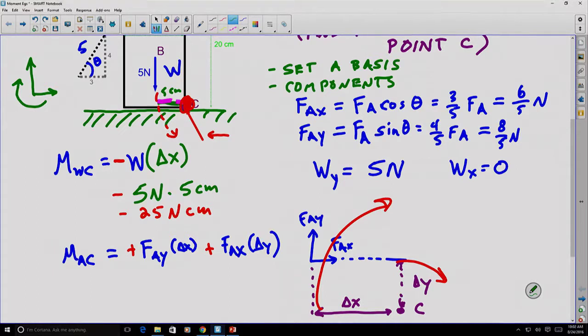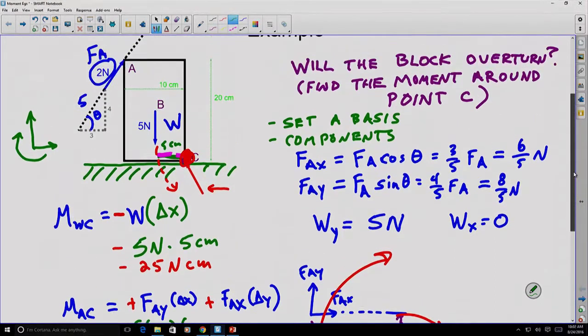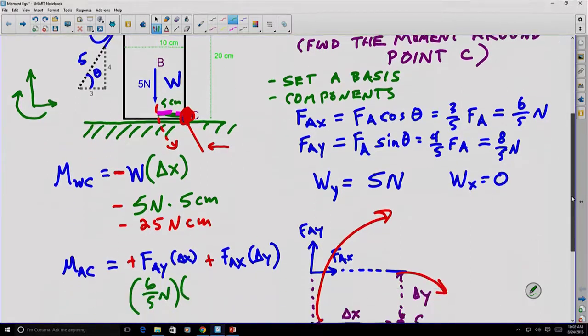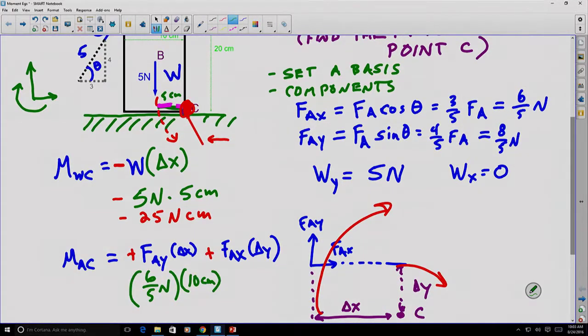Let's substitute in the values that we have. We see that we have six-fifths of a Newton for F_AY times, well, what's delta X? Delta X in this case is the width of the entire block, which is given to us as 10 centimeters. And delta Y is the height of the block, which is 20 centimeters.